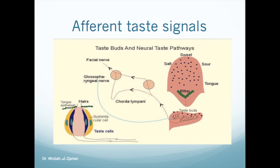The first-order neurons of the taste pathway are in the nuclei of three different cranial nerves, and their dendrites are distributed to the taste buds. From the anterior two-thirds of the tongue, signals travel in branches of the trigeminal nerve and then join the chorda tympani, which is a branch of the facial nerve. From the posterior one-third of the tongue, signals are carried by fibers in the glossopharyngeal nerve. From the epiglottis and other areas, signals are carried within branches of the vagus nerve.